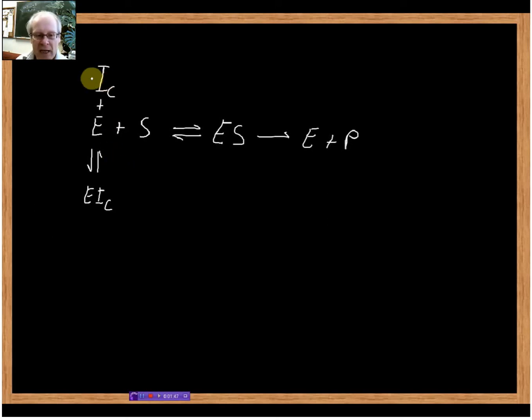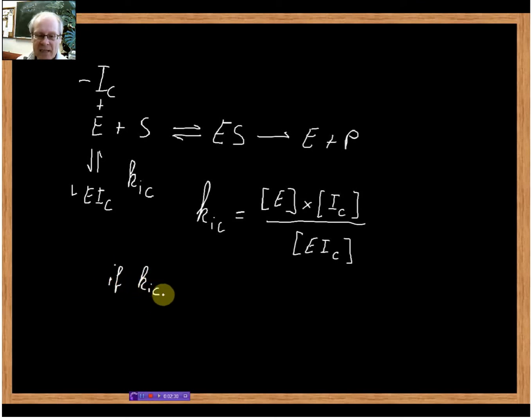For this equilibrium here we can formulate a dissociation constant, and I abbreviate that as KIC. We can write KIC as the concentration of the enzyme times the concentration of the inhibitor divided by the concentration of the enzyme-inhibitor complex.